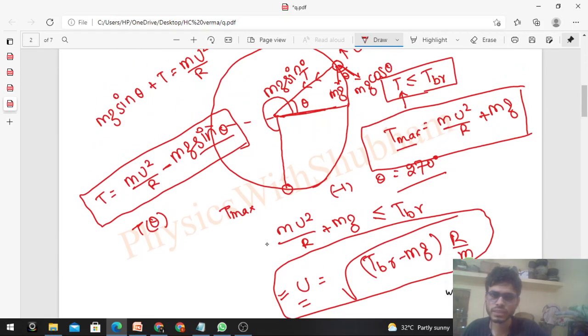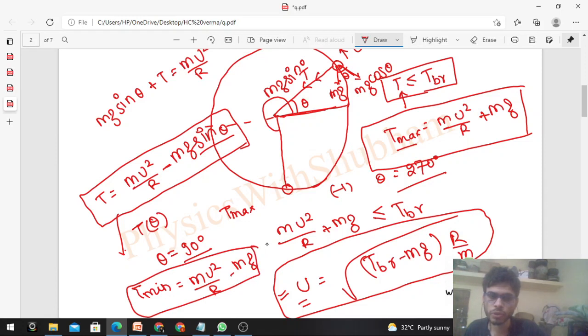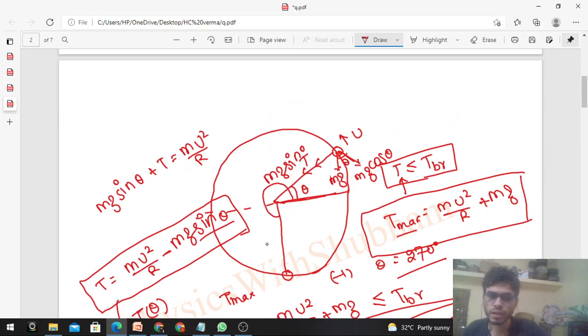If you want to draw some result from here, where will minimum tension be? Minimum tension will be when sin theta is maximum, at theta equals 90 degrees. Sin theta will be 1. T minimum will be mu squared upon r minus mg. This is the highest point, at theta equals 90 degrees, where you calculated tension. There will be minimum tension.